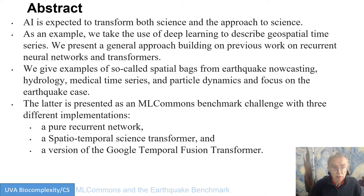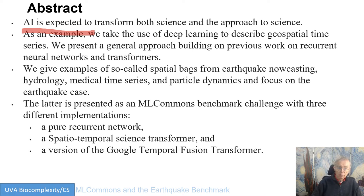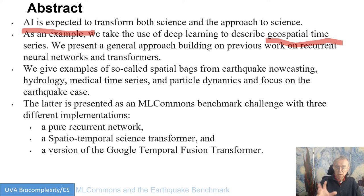So this is a summary of this talk. I already told you why AI and AI for science is important, and we view what we're describing here as an example of this. We show how to generally use deep learning to describe a very important type of experimental observable: the geospatial time series. That's a set of points as a function of time, labeled by the geolocation — the GPS location. We introduced a term we call a spatial bag, from several different applications, and we focus dominantly on the earthquake case here.